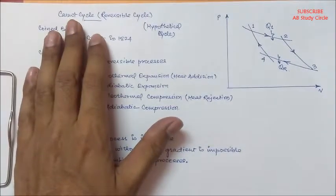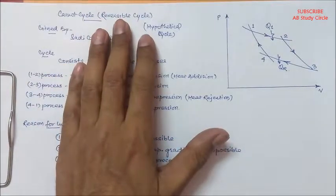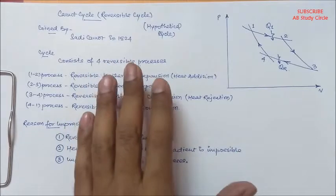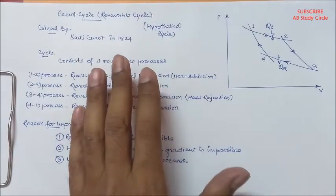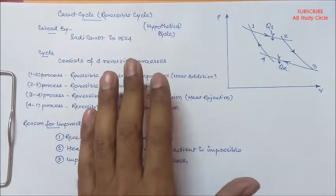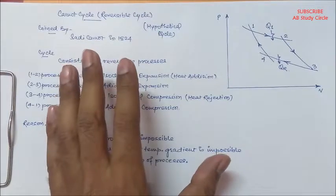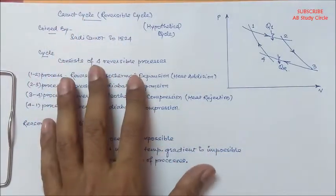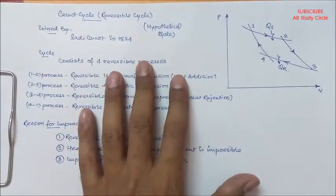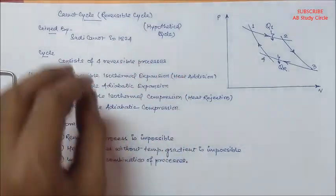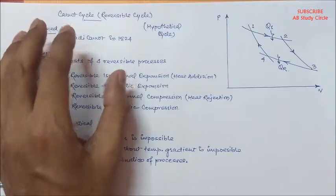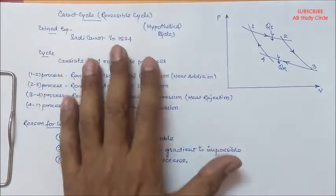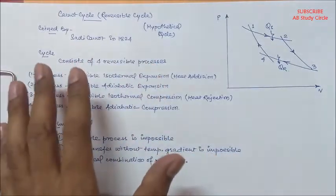Carnot cycle is also known as a reversible cycle. A reversible cycle is nothing but a cycle which is comprised of reversible processes. This Carnot cycle particularly has four reversible processes, and it is called a Carnot cycle because it was first coined by Sadi Carnot in 1824. Let's move to the PV diagram for this cycle.